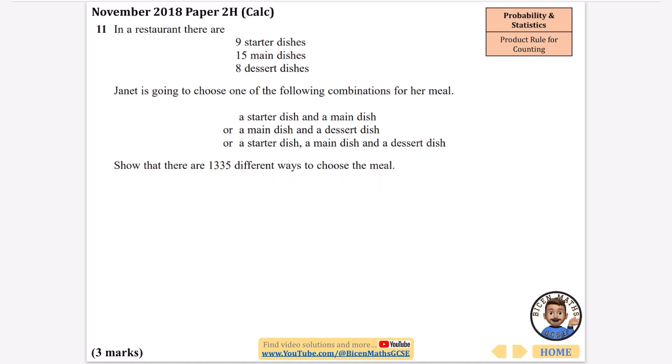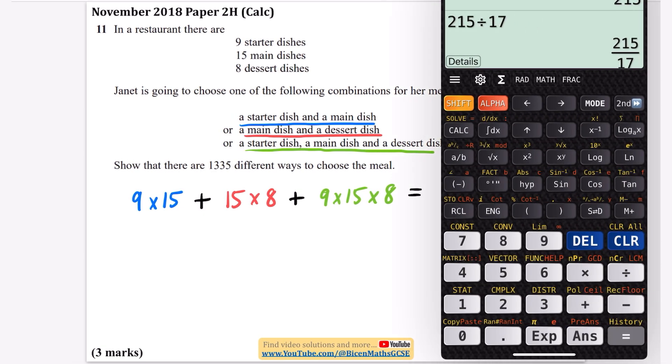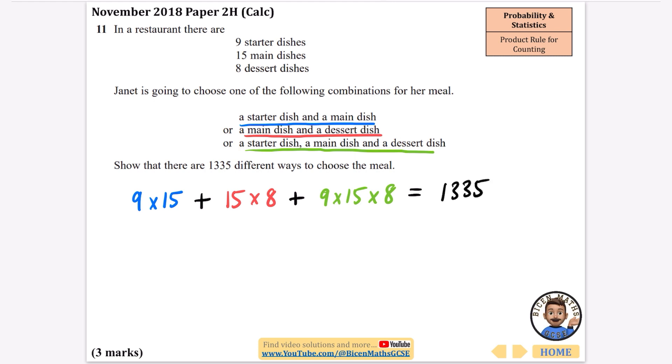First, let's do the starter and main dish: 9 times 15. Then I'm going to add on the main dish and dessert: 15 times 8. And for our last one, a starter, main and dessert: 9 times 15 times 8. We're going to see what that comes up as. So 9 times 15 plus 15 times 8 plus 9 times 15 times 8, and we do get 1,335.